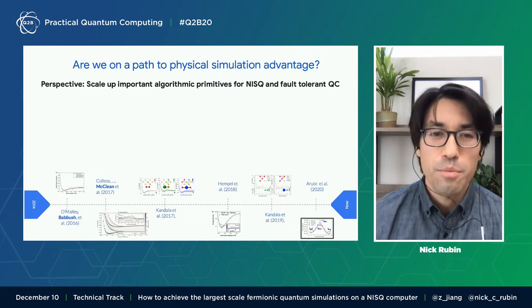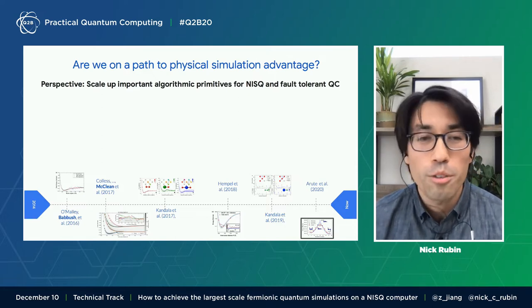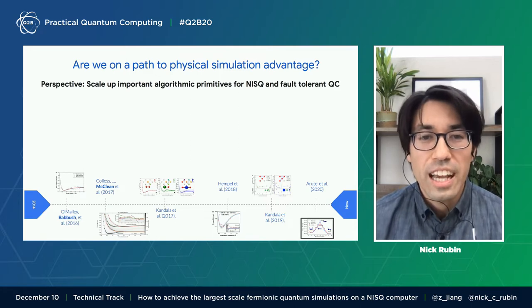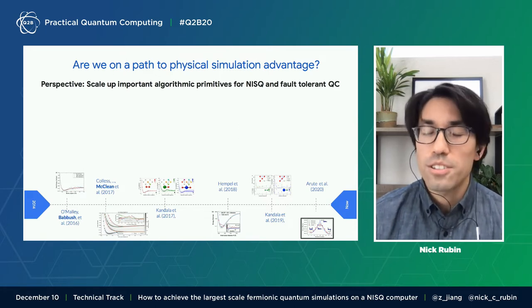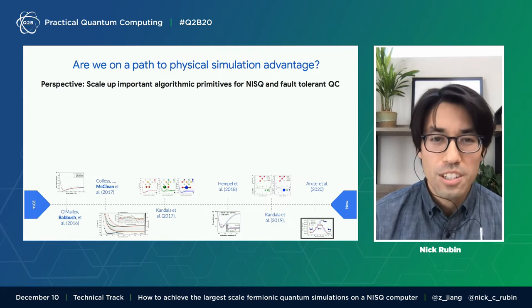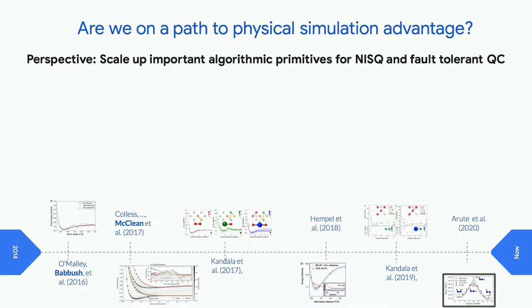So there have been a lot of NISQ chemistry and physics simulations to date. I've listed some of them below on the bottom of this slide, starting from 2016. One thing I wanted to point out about these experiments is that they all involve fewer than six qubits and barely reach the accuracies required for chemistry and physics simulation. And this isn't a criticism of these works — it's just to point out how difficult it is to get these experiments to actually work.